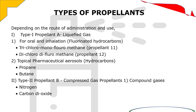Dichlorodifluoromethane, also known as Propellant 12. For topical pharmaceutical aerosols, hydrocarbons are used — examples include Propane and Butane. Type 2 propellant B consists of compressed gas propellants, which are compound gases. Examples: Nitrogen and Carbon dioxide.